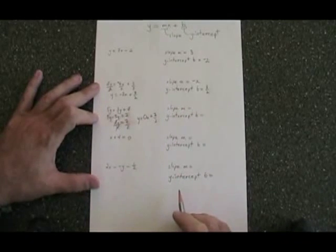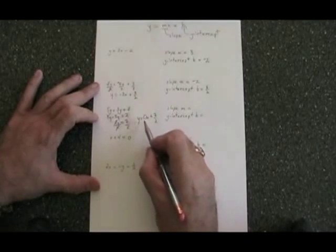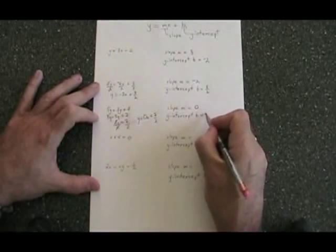Therefore, we're in y equals mx plus b form, and our m is equal to 0. Our b is equal to 7 halves.